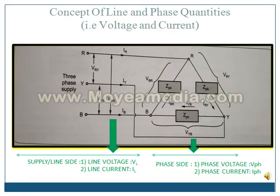Let us now understand the concept of line and phase quantity in delta connected load. In the figure, you can see there are two sections: supply side and the load side. Supply side is called as the line side, whereas the load side is called as the phase side. On both sides, line as well as phase, there are two quantities: voltage and current.